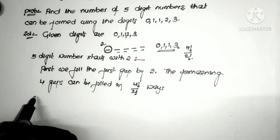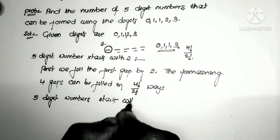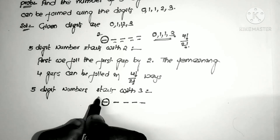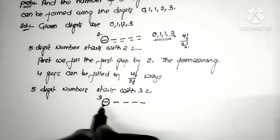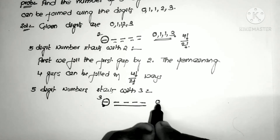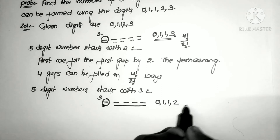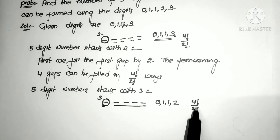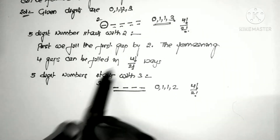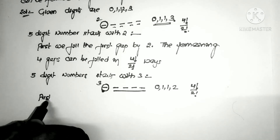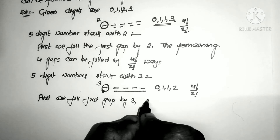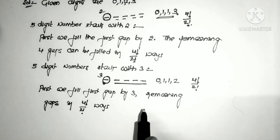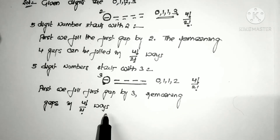For 5-digit numbers starting with 3: we fix 3 in the first place, and the remaining 4 gaps are filled by 0, 1, 1, 2. Since 1 is repeated twice, this can also be done in 4!/2! ways. So the count of 5-digit numbers starting with 3 is 4!/2!.